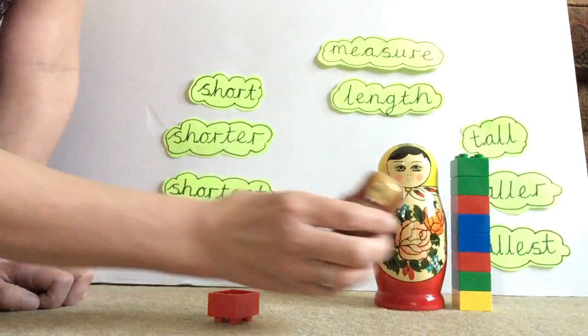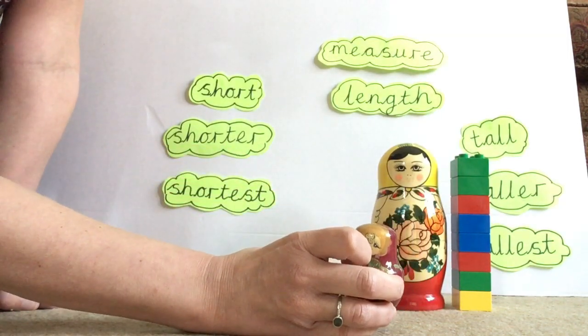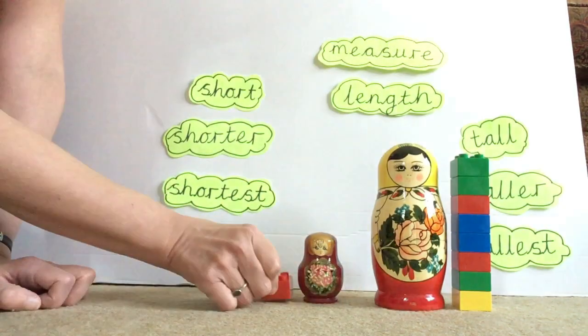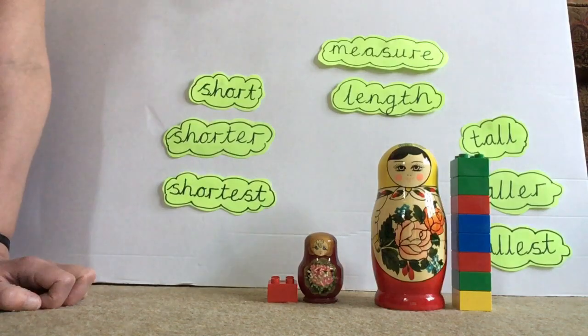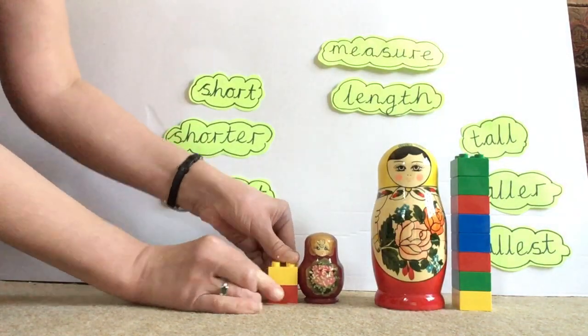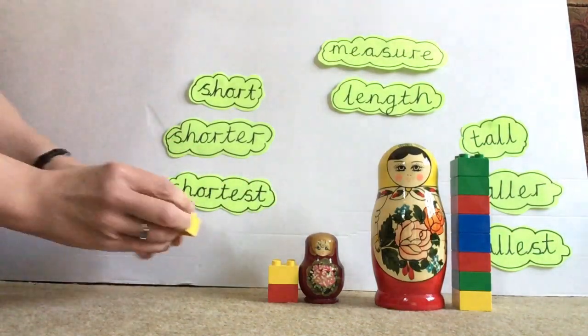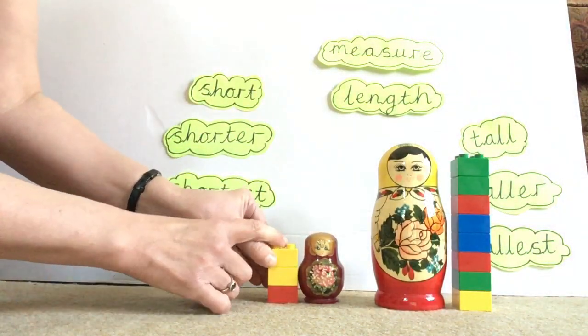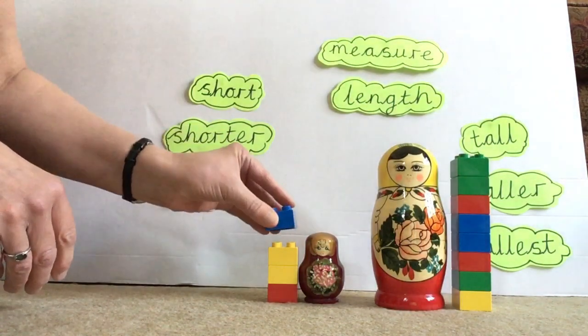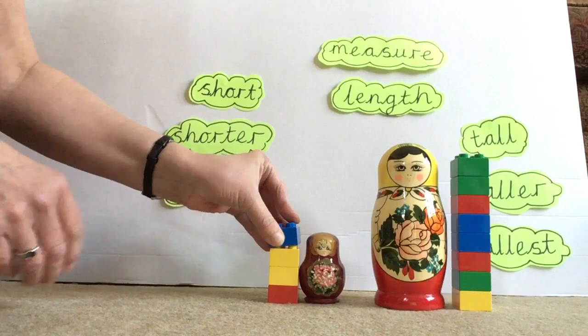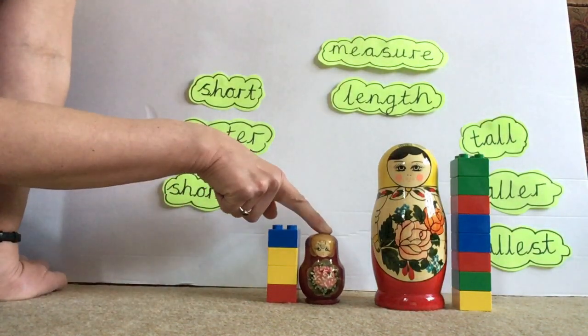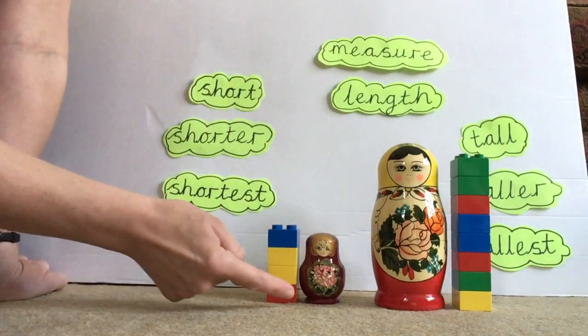I wonder how much this shorter one is. Should we count and measure together? Here it is. Put the first one down. One, two, three. Do you think I need another one? Perhaps I do. Four.